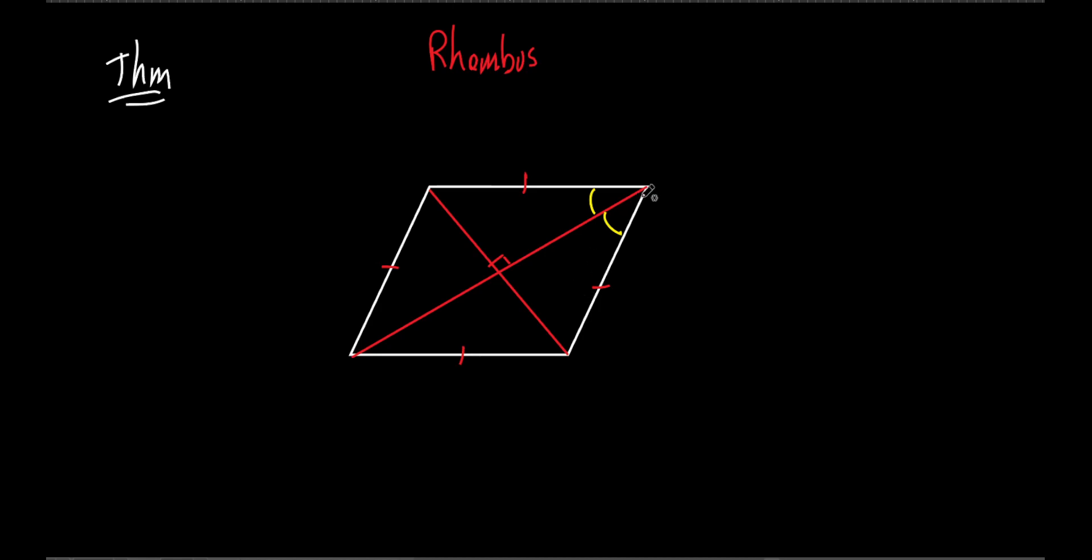Here's a diagonal. What does it do? Bisect it. What does that mean, bisect it? It means it splits that angle in half. In half.